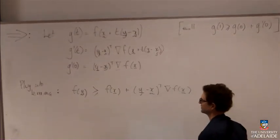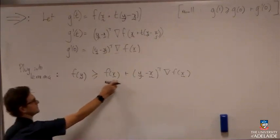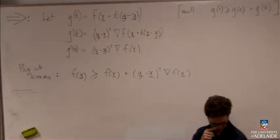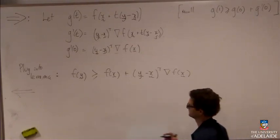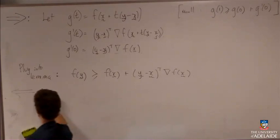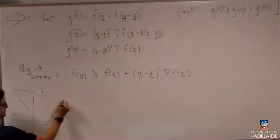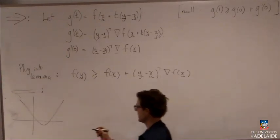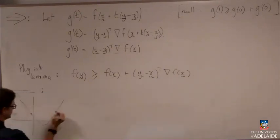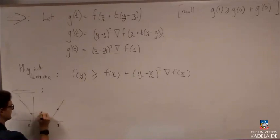The harder direction is going back the other way. So assuming this result here and then using it to prove that my function f is convex. So the thing that I need to do here, and this is non-obvious, is to draw up a picture of my function, and then I'm going to think about three points here. So x, y, and then a point in between, some point z in between.